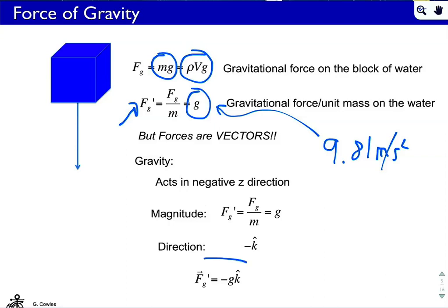So strictly speaking, our force per unit mass due to gravity is negative g*k-hat, where k-hat is the unit vector pointing up — the z-direction unit vector with no magnitude, only direction upward. Since gravity pulls down, we have a minus sign. Later, when we reassemble the entire momentum equations, this will only show up in the w-momentum equation, because it only acts in the vertical.